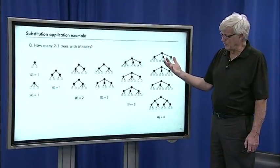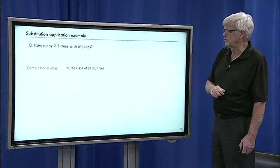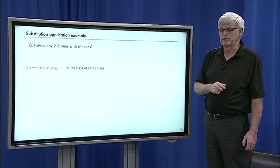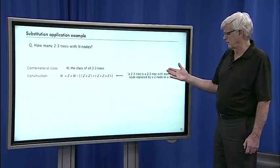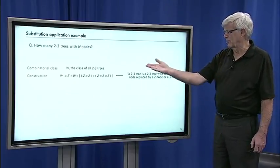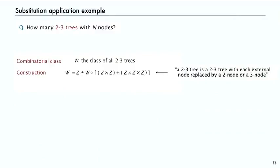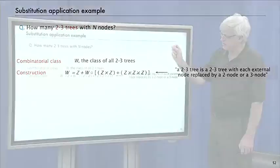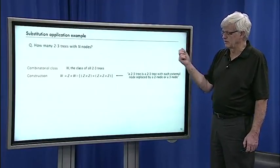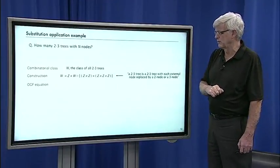With the substitution operation it's easy to write down a generating function equation for these types of trees. That's the generating function equation using substitution. To get a two-three tree, what you do is take each external node and replace it either with a two node or a three node. Then the distance from the root to the bottom is always the same.